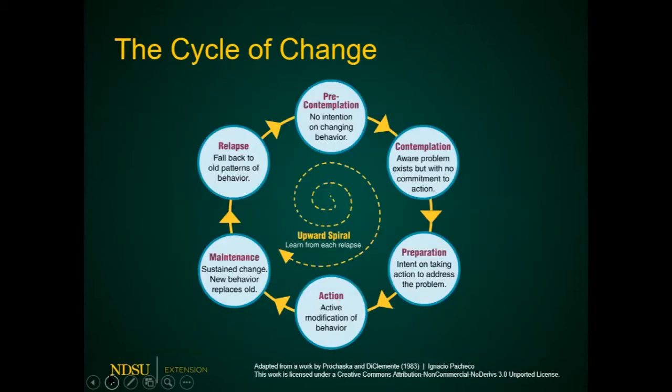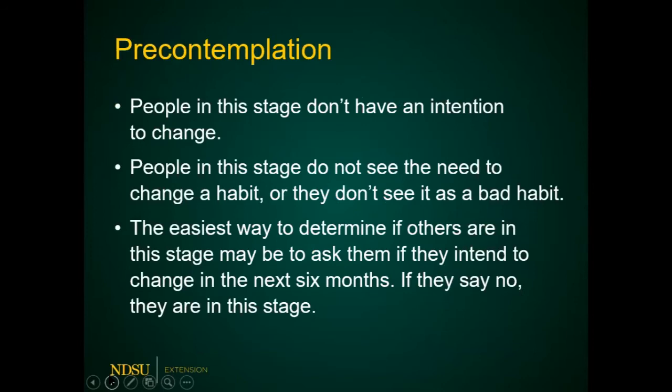The next model is the cycle of change, which focuses more on an individual basis. The authors are Prochaska and DiClemente. The first step is pre-contemplation, where people don't have any intention to change — they are not even thinking about change. If you talk to people and they say 'no, we don't need to change,' that's pre-contemplation.